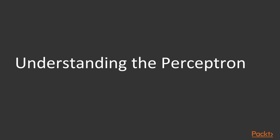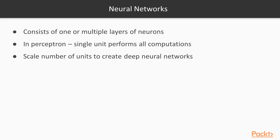Let's understand the perceptron. First, we need to understand the basics of neural networks. A neural network consists of one or multiple layers of neurons, named after the biological neurons in human brains. We will demonstrate the mechanics of a single neuron by implementing a perceptron. In a perceptron, a single unit performs all the computations. Later, we will scale the number of units to create deep neural networks.